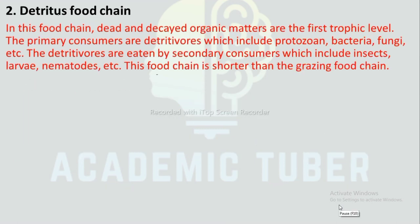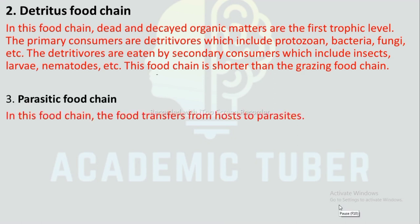Detritus food chain: In this food chain, dead and decayed organic matter is the first trophic level. The primary consumers are detritivores, which include protozoans, bacteria, and fungi. The detritivores are eaten by secondary consumers, which include insects, larvae, and nematodes. This food chain is shorter than the grazing food chain.